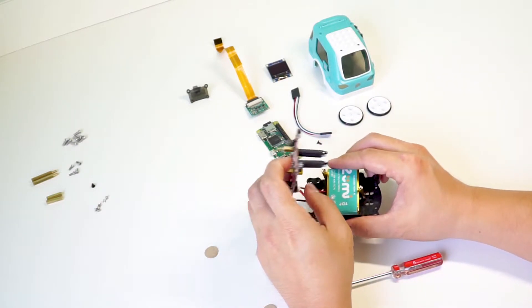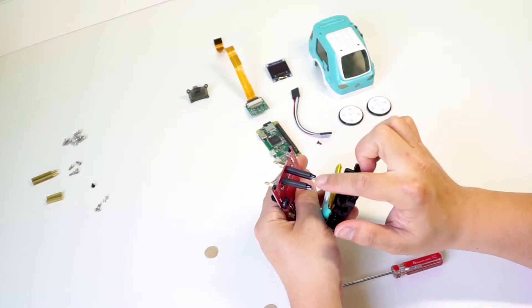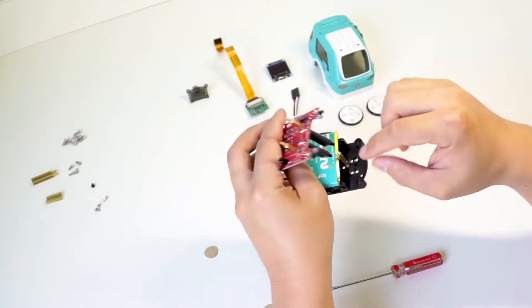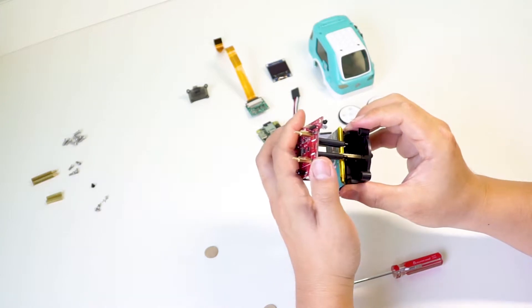Now we're going to flip the board back over on top of the chassis, like you're closing a book. When you do, make sure these four IR sensors slide into the four holes in the chassis. Do this carefully to avoid bending or damaging your sensors.